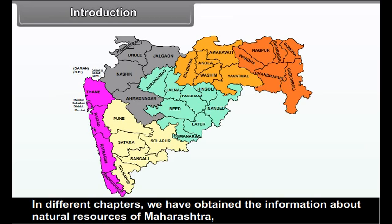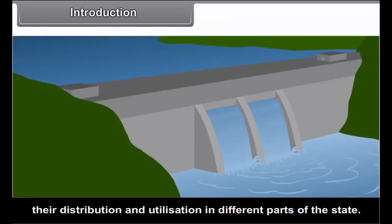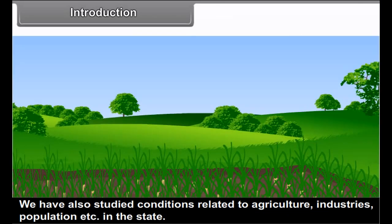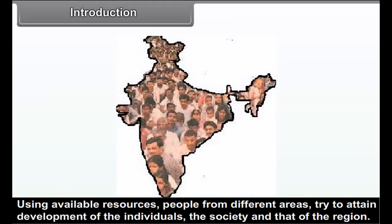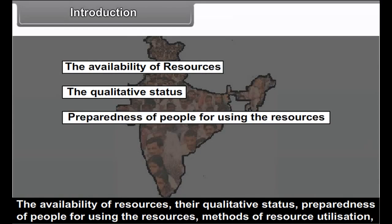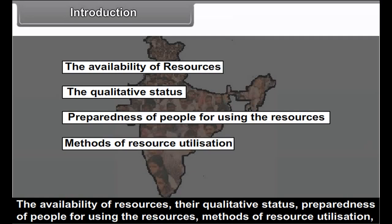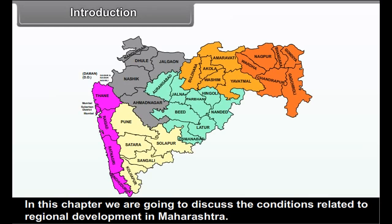In different chapters, we have obtained information about natural resources of Maharashtra, their distribution and utilization in different parts of the state. We have also studied conditions related to agriculture, industries, population, etc. Using available resources, people from different areas try to attain development of individuals, the society, and that of the region. The availability of resources, their qualitative status, preparedness of people for using resources, methods of resource utilization, and the infrastructure available in the region are some of the factors on which development depends. In this chapter, we are going to discuss the conditions related to regional development in Maharashtra.